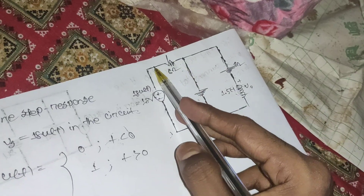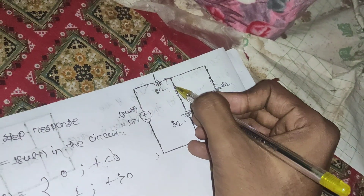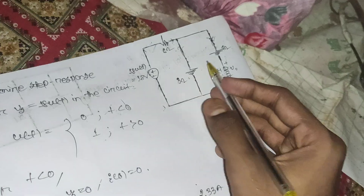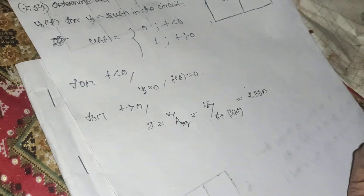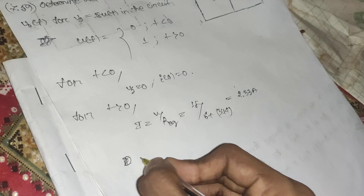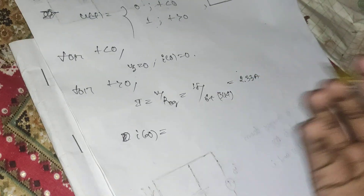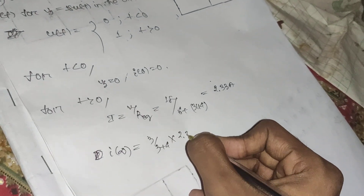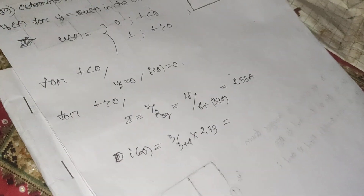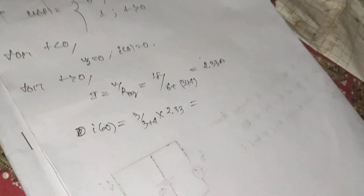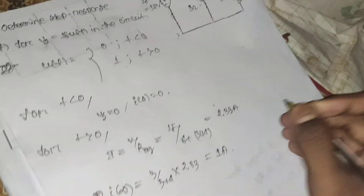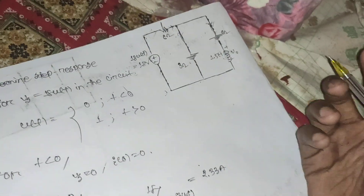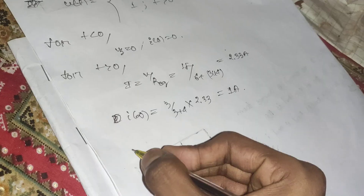The current splits into two paths. We want the current through the 4-ohm branch (the inductor). Using the current divider: i(∞) = [3 / (3 + 4)] × 2.33 ≈ 0.999 ≈ 1 ampere. So the inductor current at steady state is 1 ampere.